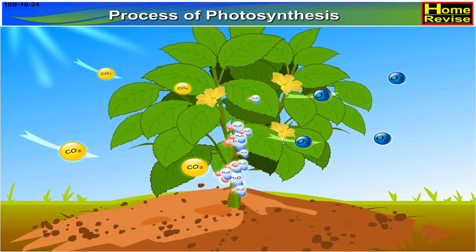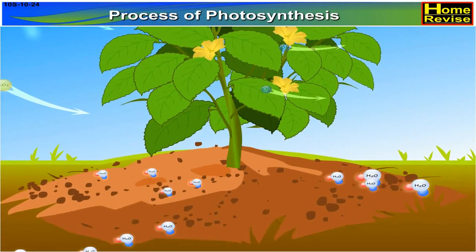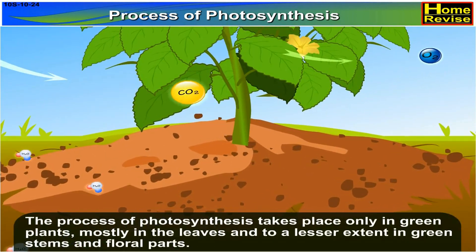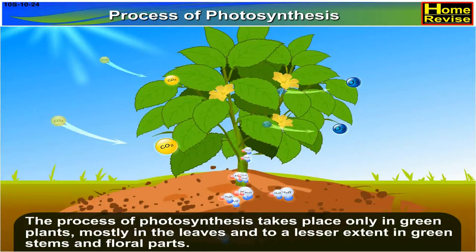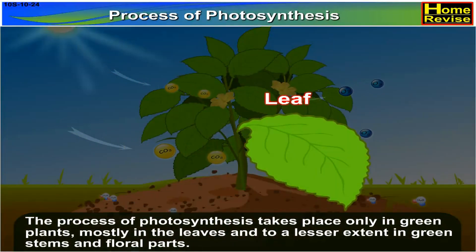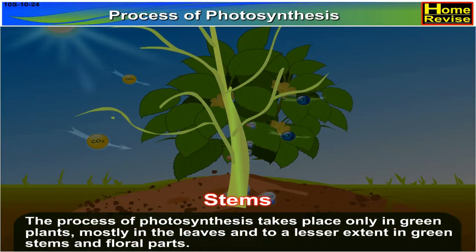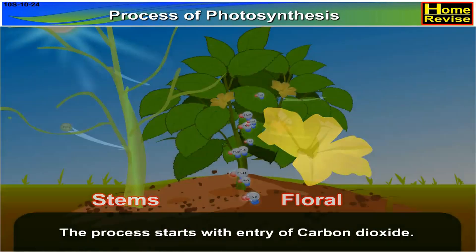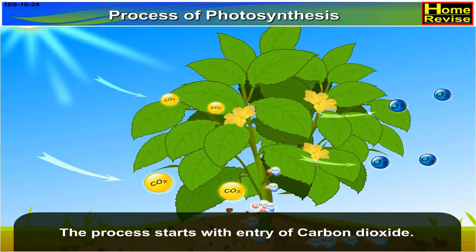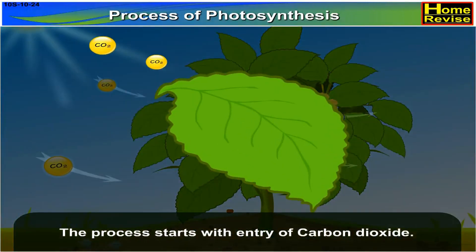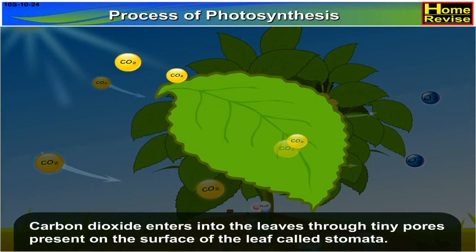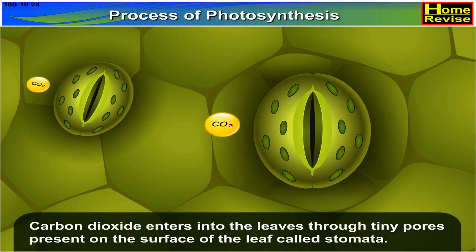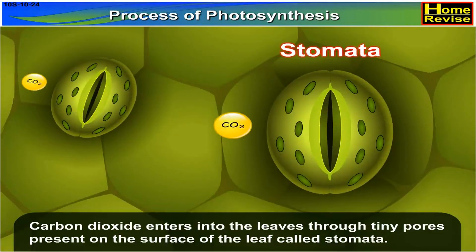Process of photosynthesis. The process of photosynthesis takes place only in green plants, mostly in the leaves and to a lesser extent in green stems and floral parts. The process starts with entry of carbon dioxide. Carbon dioxide enters into the leaves through tiny pores present on the surface of the leaf called stomata.